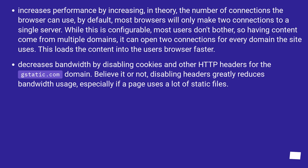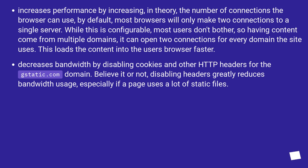This increases performance by increasing, in theory, the number of connections the browser can use. By default, most browsers will only make two connections to a single server. While this is configurable, most users don't bother. So having content come from multiple domains, it can open two connections for every domain the site uses, which loads the content into the user's browser faster.